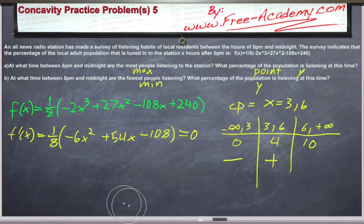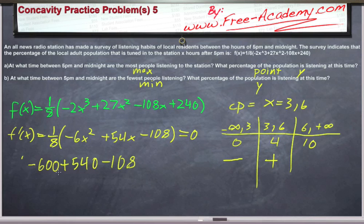Now let's do the same thing for positive ten, and we're going to get negative six-hundred plus five-hundred and forty minus one-o-eight, all of course multiplied by one-over-eight. That's clearly a negative number.